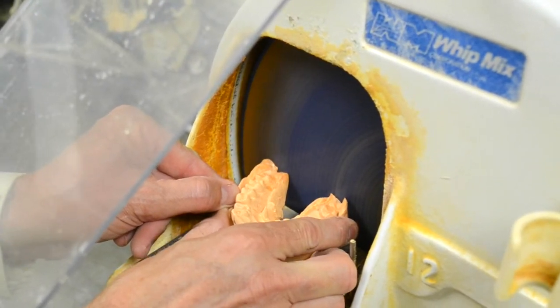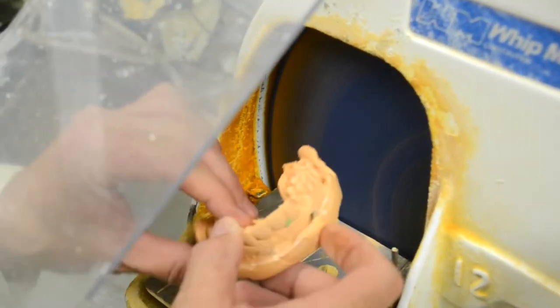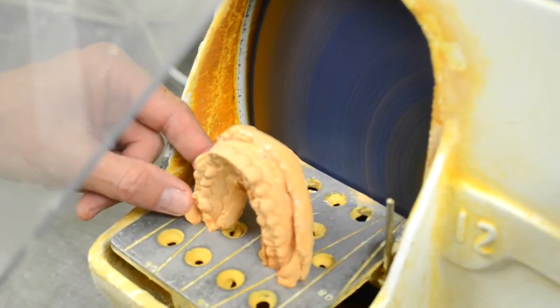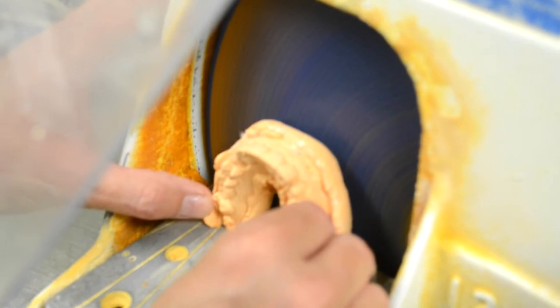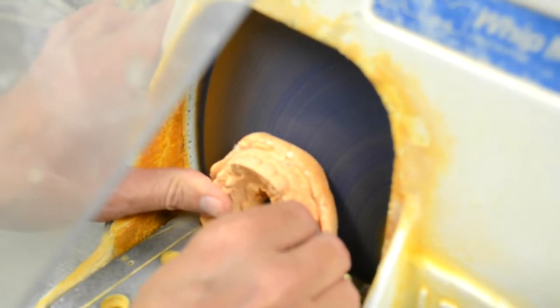We're going to make it flat so it's perpendicular to the plane of occlusion. Now it can sit up flat, and all I have to do is use the cleats as my guide to grind the back of the cast.